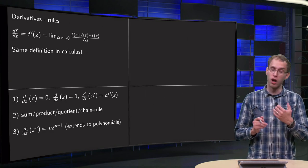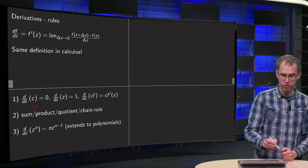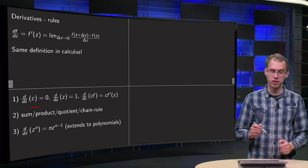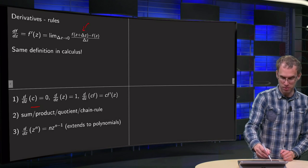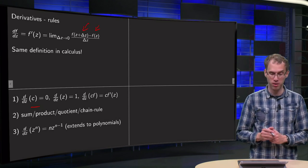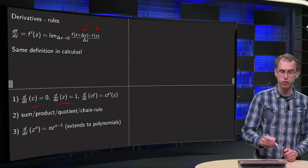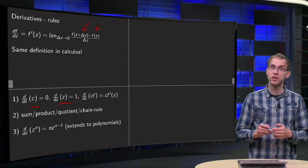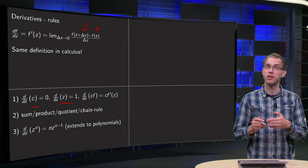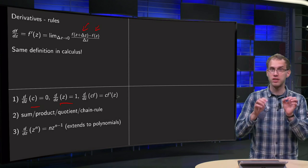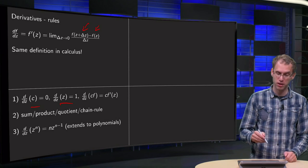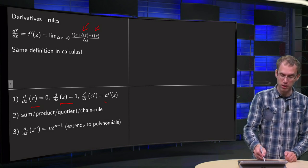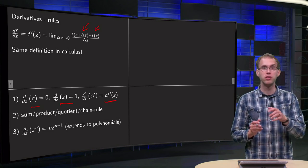So for example, we have that the derivative of a constant equals 0. You can see that using the definition because if you have a constant, your f(z+Δz) = c minus f(z) = c equals 0. The derivative of z equals 1 because in that case your f(z+Δz) will be z+Δz and your f(z) is z, so you will get (z+Δz-z)/Δz = 1. And you can take a constant out and also prove it just using the definition.